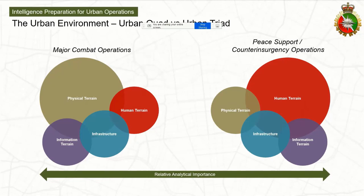When it comes to the type of operations we're working in, for major combat operations commanders are going to be a lot more concerned with the physical terrain and the enemy. But when you start merging into peace support and counterinsurgency operations, the focus shifts more towards the human terrain. So the recommendations I present here can't necessarily be seen as a one-size-fits-all for every type of operation.